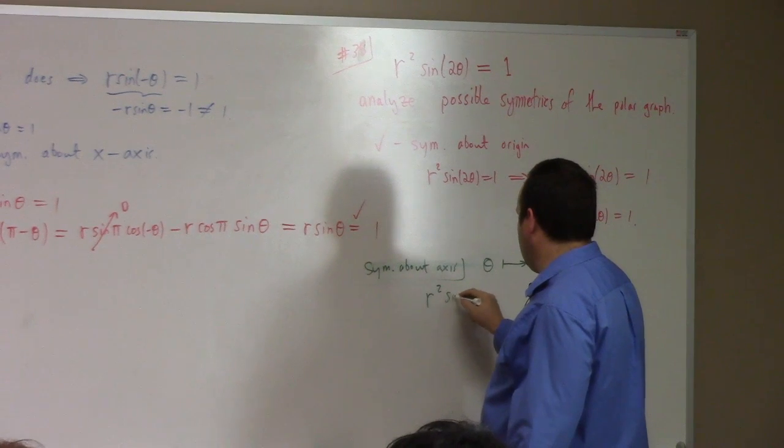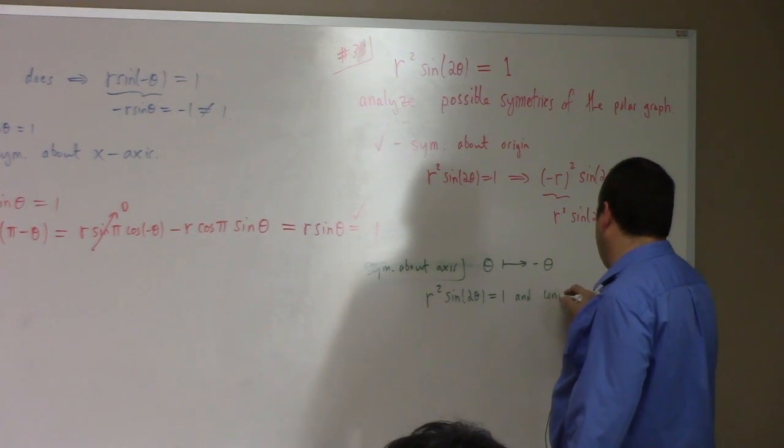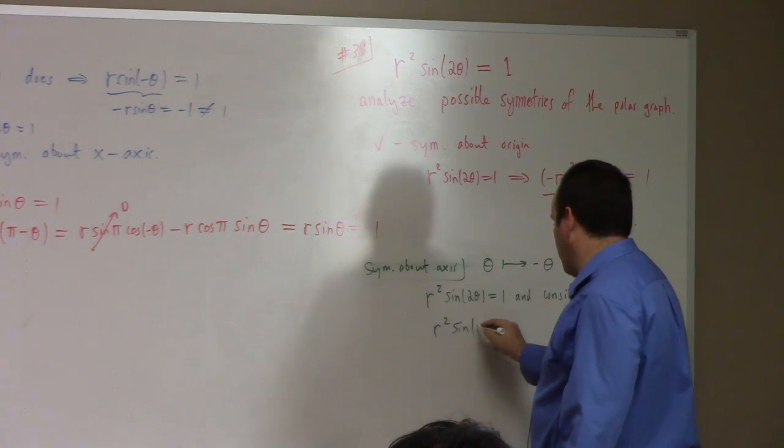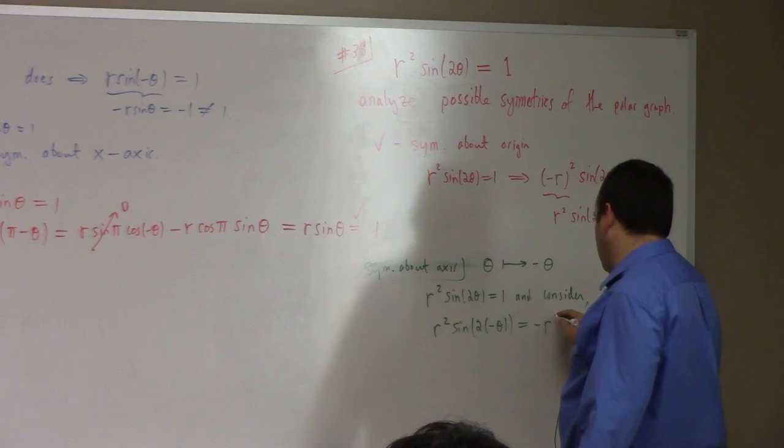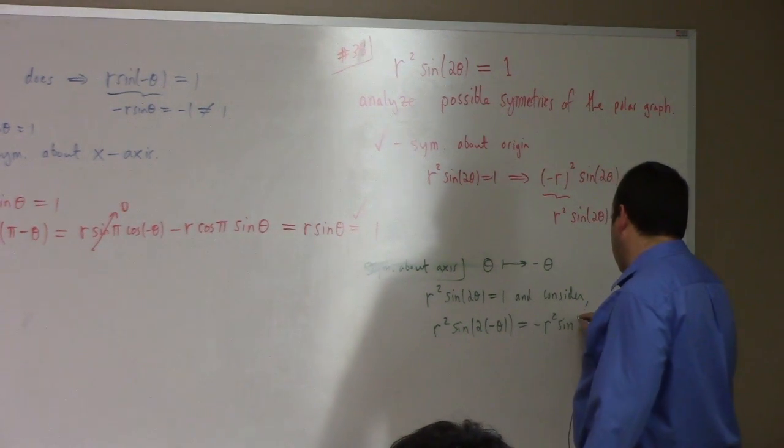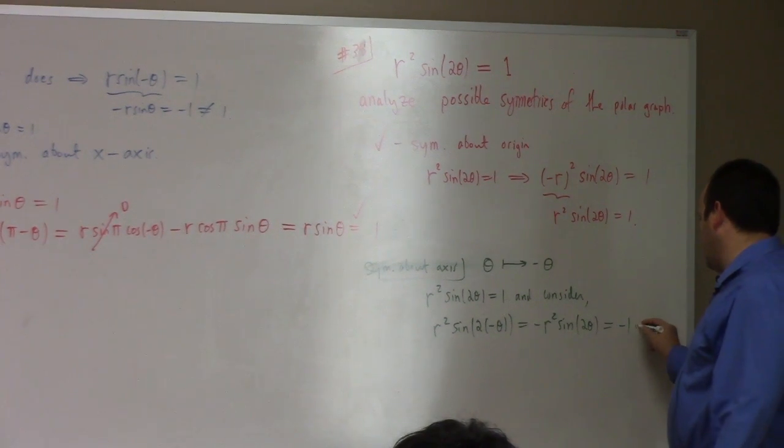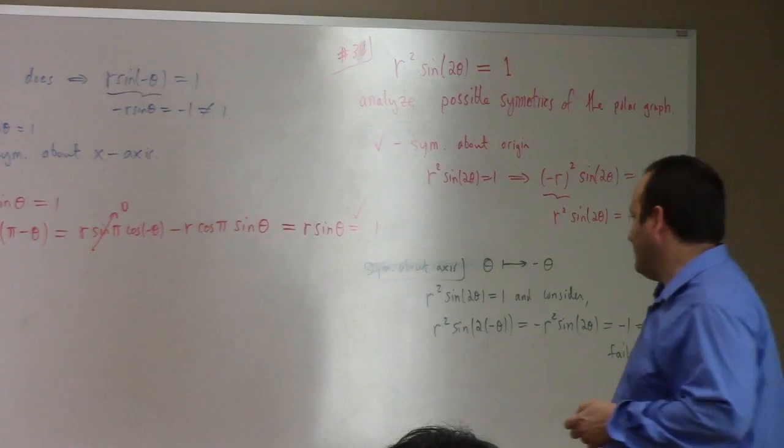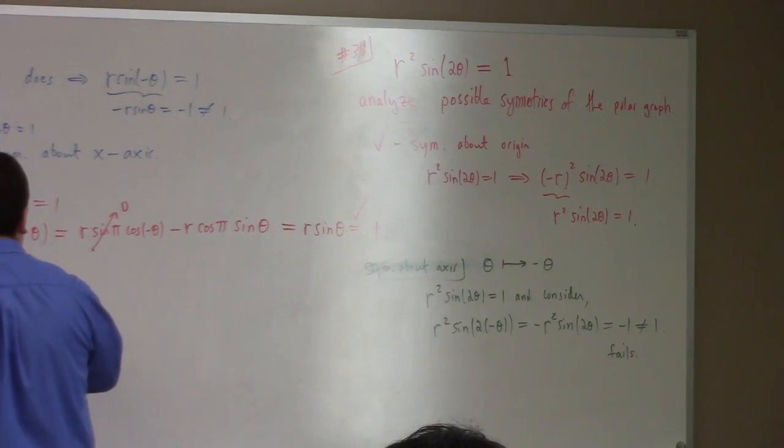Same thing you did with the last one. We trade what? We trade theta for negative theta, right? Assume r squared sine two theta is equal to one. And, consider r squared sine of minus two theta. Is that equal to one? Well, no. That's equal to minus r squared sine of two theta because sine is an odd function. So I pull the minus out. That's equal to minus one, which, of course, is not equal to one. Fail. Right?